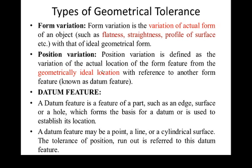The next one is position variation. Position variation is defined as the variation of an actual position of the form feature from the geometrically identical location with respect to another form feature known as a datum surface. What is the datum feature or datum surface? It is a standard surface with respect to which all dimensions are referred. Datum is the feature of the part such as the edge, surface or hole which forms the basis for establishing its location. Datum feature may be a point, a line or a cylindrical surface. The tolerance of position and run out is referred to a datum feature or datum surfaces.